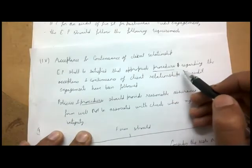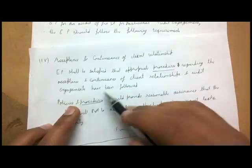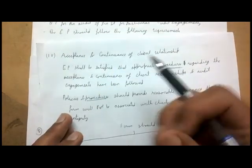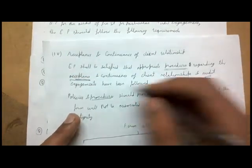Moving to acceptance and continuance of client relationships: as shown in the KPMG document, prohibited engagements must not be accepted. The engagement partner shall be satisfied that appropriate procedures regarding the acceptance and continuance of client relationships and audit engagements have been followed. These procedures are already laid down in the firm's system of quality control manual.